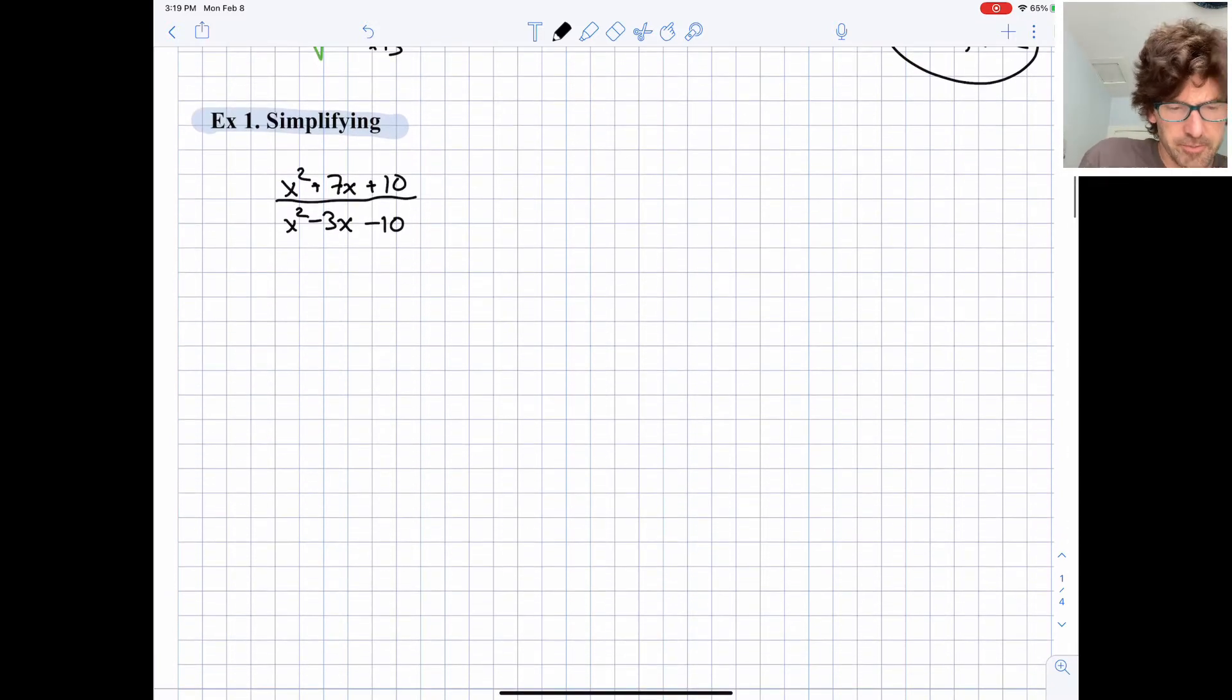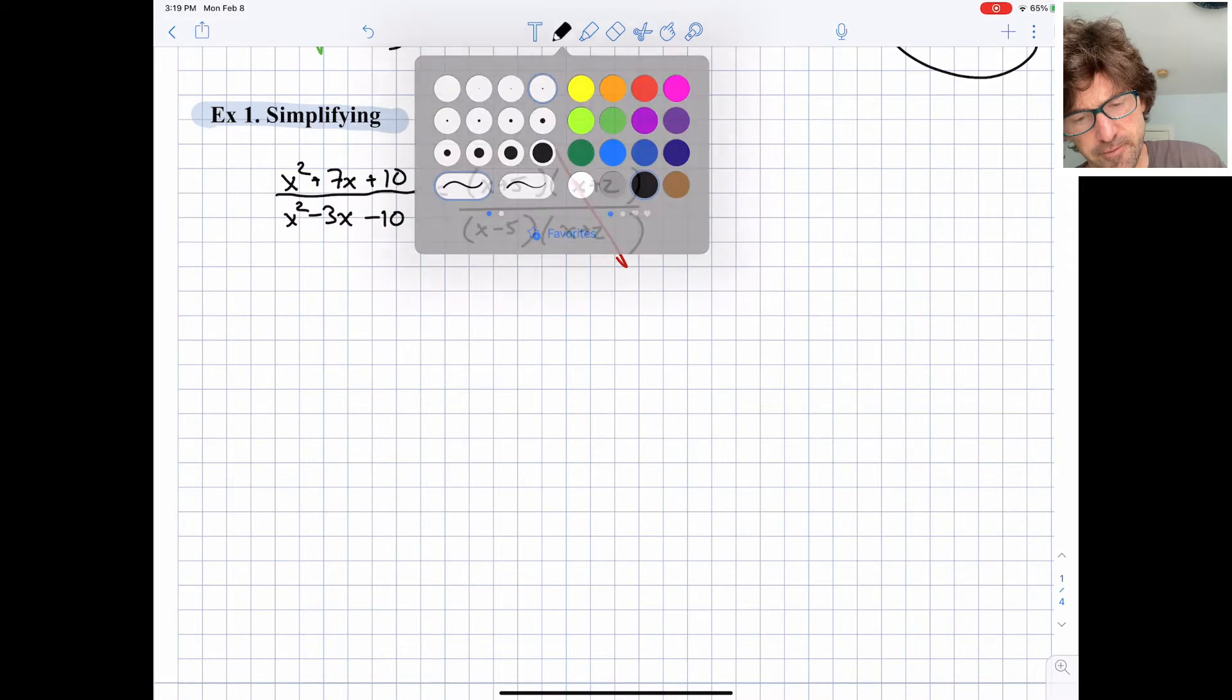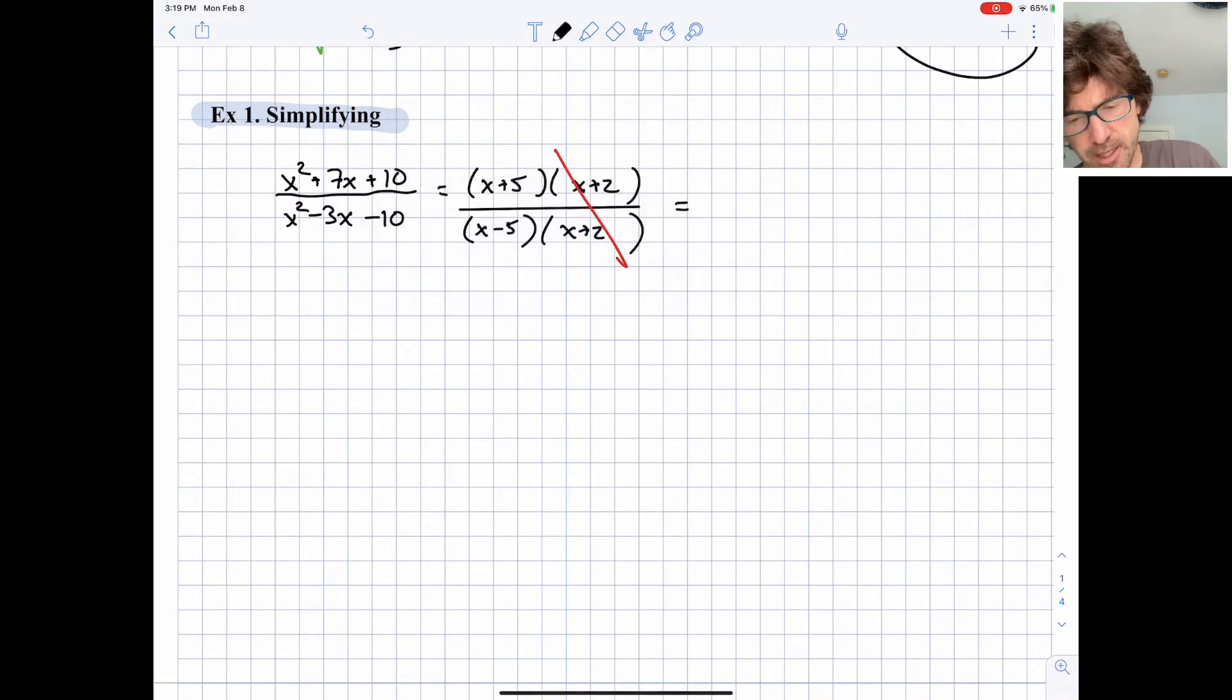So let's do a quick example. We have x squared plus 7x plus 10, over x squared minus 3x minus 10. So I would definitely do some factoring first. I'm going to try to factor both the top and the bottom, the numerator and the denominator. Looks like we have x plus 5, x plus 2 for our numerator, and x minus 5, x plus 2 for our denominator. So we do have some terms that could cancel. And our simplest form would then be x plus 5 over x minus 5.